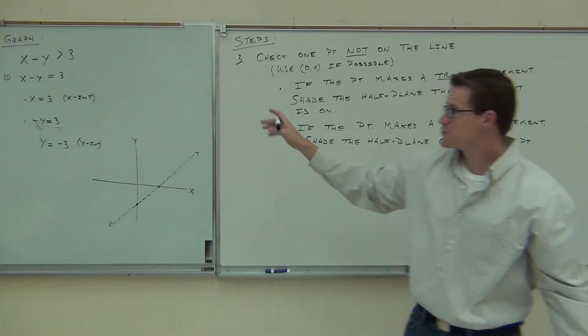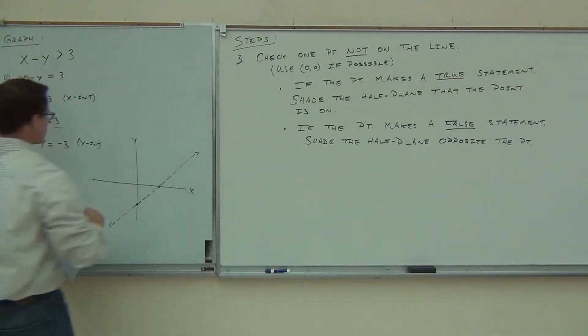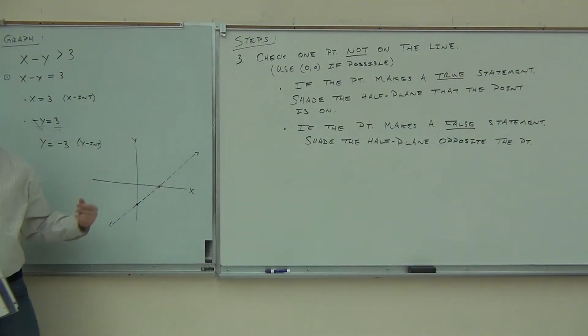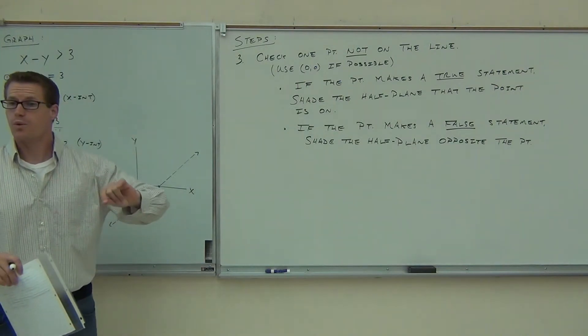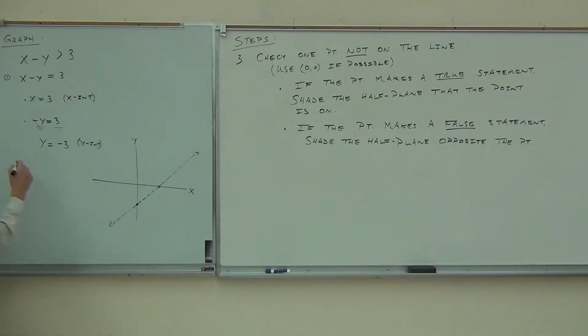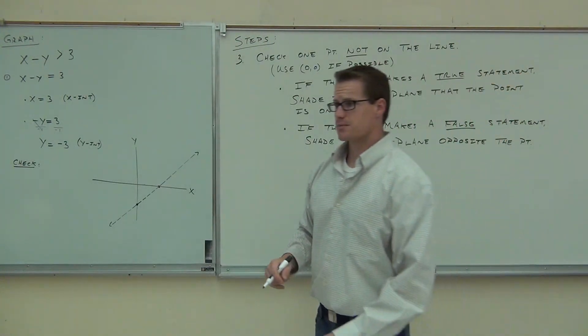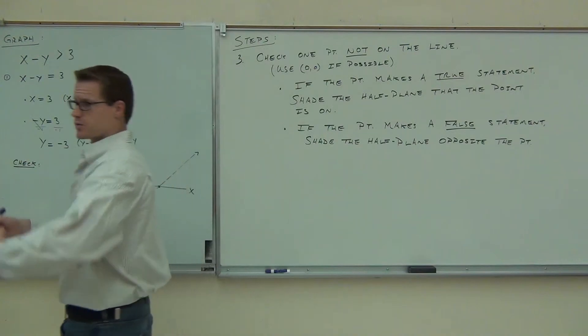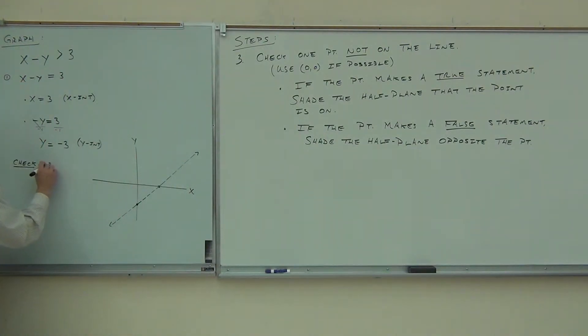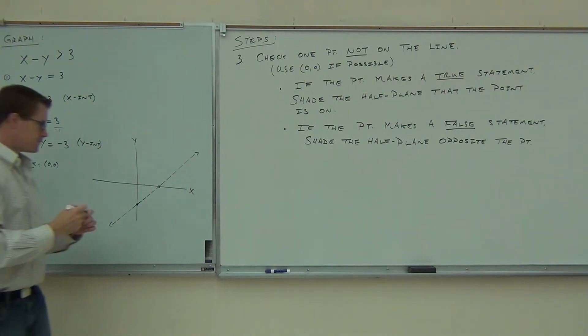And the half plane just means the side of the line. So what we're going to do after we've set it equal, after we've found our intercepts, after we've graphed our line with a dotted or solid line, depending on whether we're equal or not equal, we're going to write a little word down here. We're going to write check. And you're going to tell me the point that we are going to check. What point is that in this case? Can we check 0, 0? Yeah, it's not going through there. So we're going to check 0, 0.